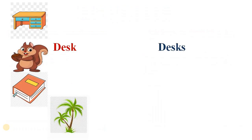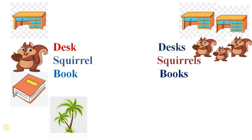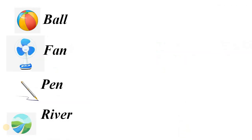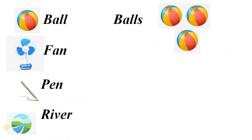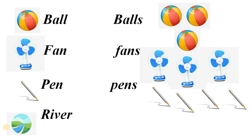Let's check some more examples. The plural of desk is desks. Squirrel is singular and squirrels is plural. The plural of book is books and the plural of tree is trees. Let's see some words here: wall, balls, fan, fence, pen, pens, river, rivers.